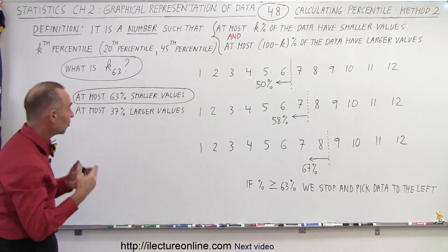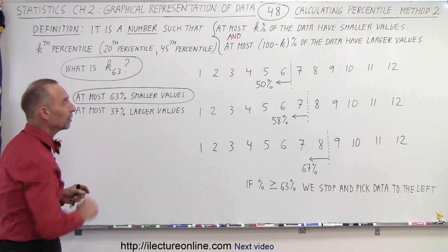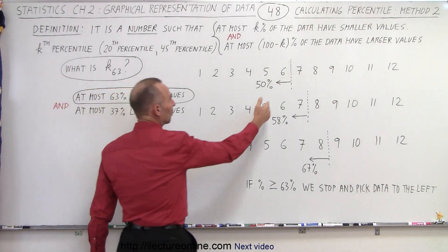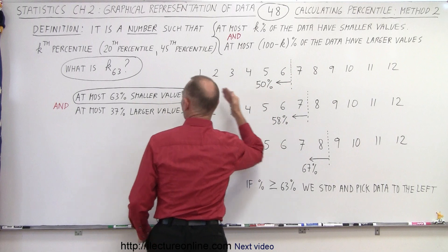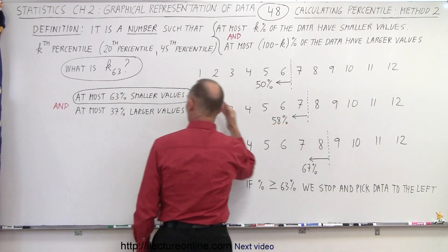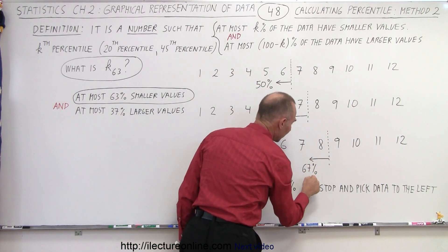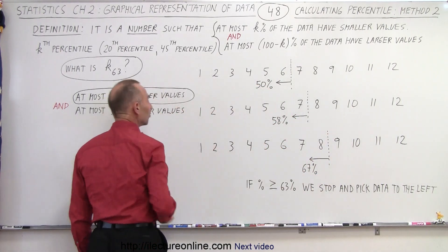We cannot have more than 63 percent of all the data values smaller than the point that we picked, so we just keep checking. We pick this point right here, 50 percent, it's still smaller, so we pick the next boundary, that's 58 percent, it's still smaller, then we pick the next boundary, and look at that, 67 percent, which is greater than 63 percent.